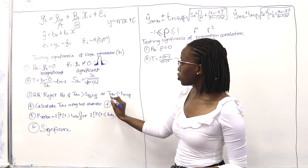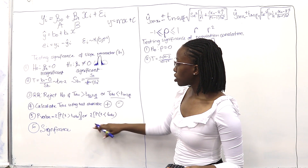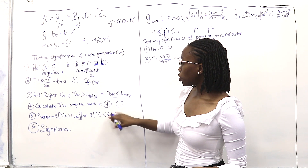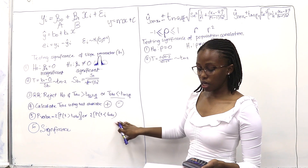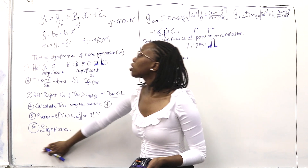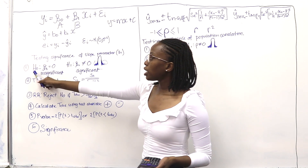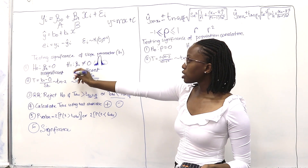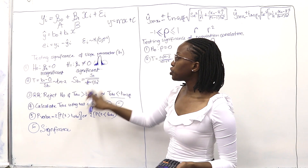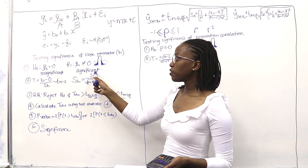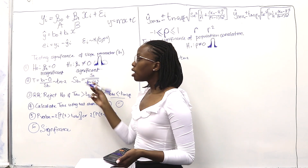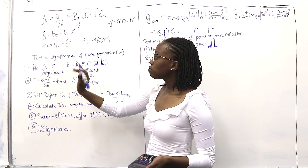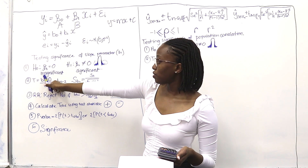If you get a negative T observed, you use 2 times P(T less than T observed), which will be negative. For the conclusion, remember: H0 means the slope is insignificant, and H1 means it's significant. If we reject H0, our slope is significant because we're supporting H1. If we fail to reject H0, it suggests the slope is insignificant.